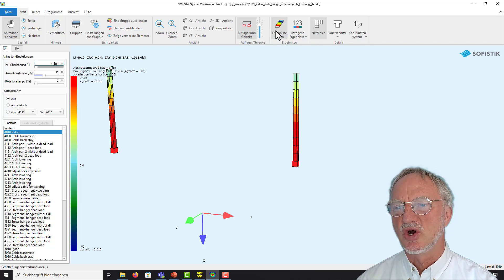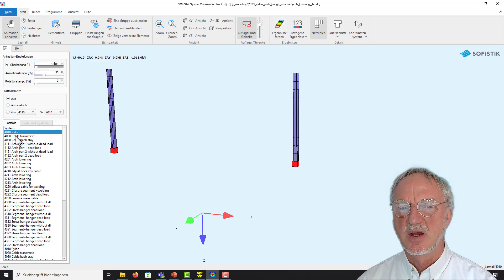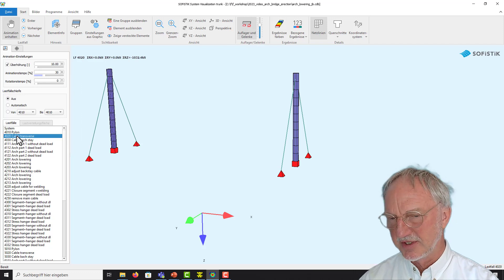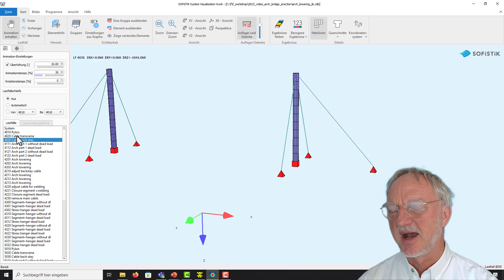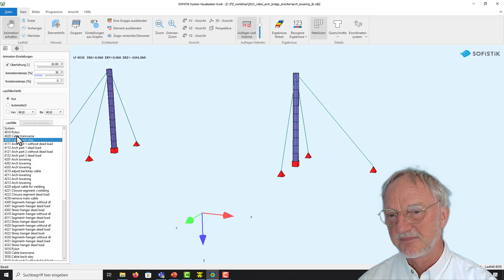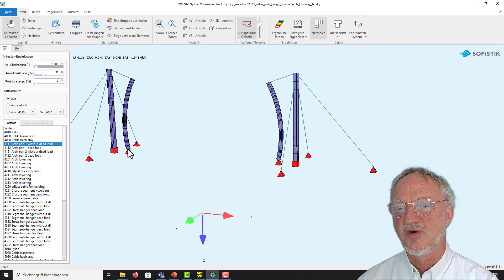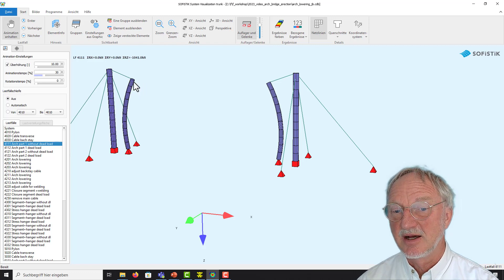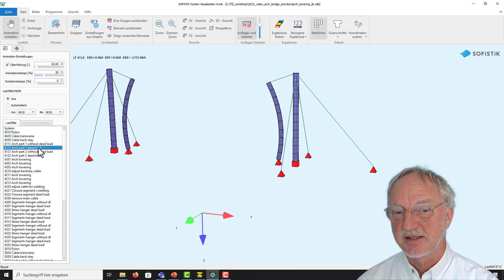And switch off the colors. We first stabilize the pylon by some cables. Then we erect the first part of the arc vertical without dead load. Then we activate the dead load.